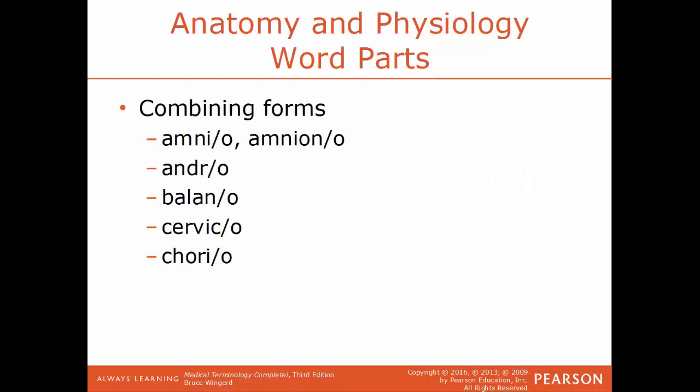We'll start off with some anatomy, physiology, and word parts — some common combining forms that you'll see. The first one: amnio or amniano is a reference to the amniotic sac, the sac that surrounds the developing embryo. Andro is a reference to male. Balano is a reference to the glans penis, or the head of the penis.